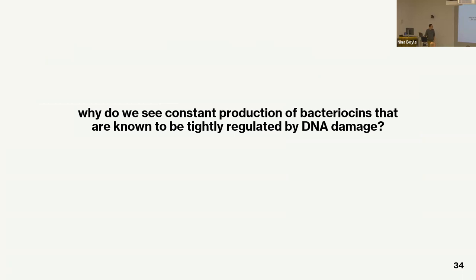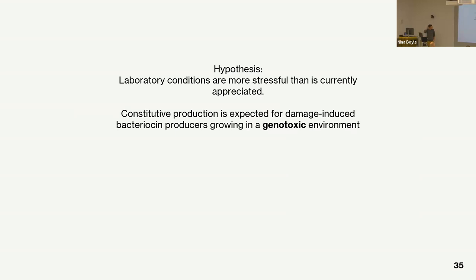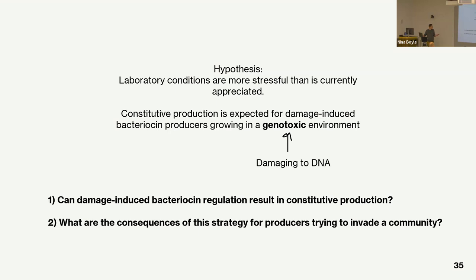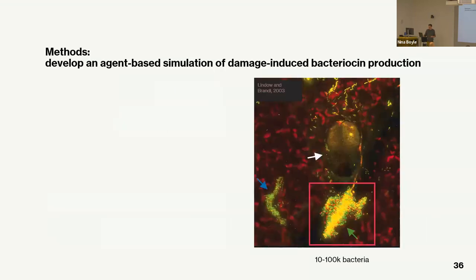My hypothesis: maybe lab conditions are more stressful than people appreciate, and it is just DNA damage. Another way to say this is that constitutive expression — at a population level, not everyone producing — is expected when they're growing in a genotoxic environment. First question: can damage-induced bacteriocin regulation result in constitutive production? If so, let's throw them into communities and see the consequences. I'm doing this with an agent-based model — modeling the behavior of individual cells and letting population dynamics emerge.